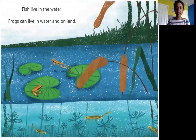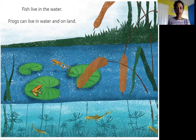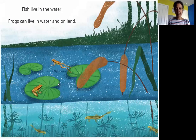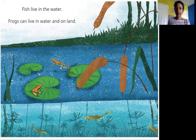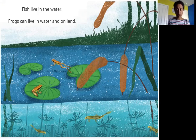Fish live in the water. Frogs can live in water and on land. In the picture there are frogs — one of them is just sitting on a leaf and the other is jumping from one leaf to the other. Frogs can also swim. And there are fish in this picture swimming in the water — they live in the water.